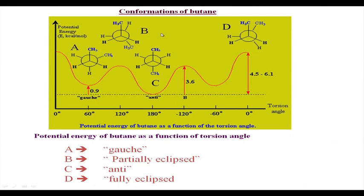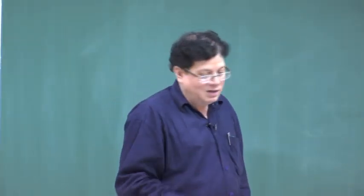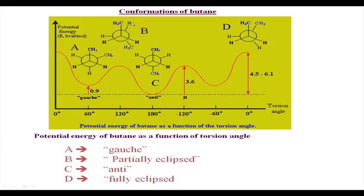The B form, where the methyl and hydrogen are eclipsing — shown slightly inclined since a perfectly eclipsed form cannot be drawn — is called partial eclipse. B will be partially eclipsed. C, where the methyl-methyl dihedral angle is 180 degrees, is called anti. Then you have a fully eclipsed form where the methyls eclipse each other — that is the fully eclipsed form with the highest energy.